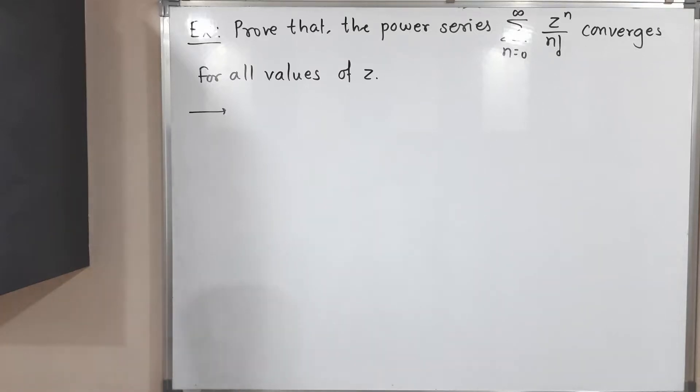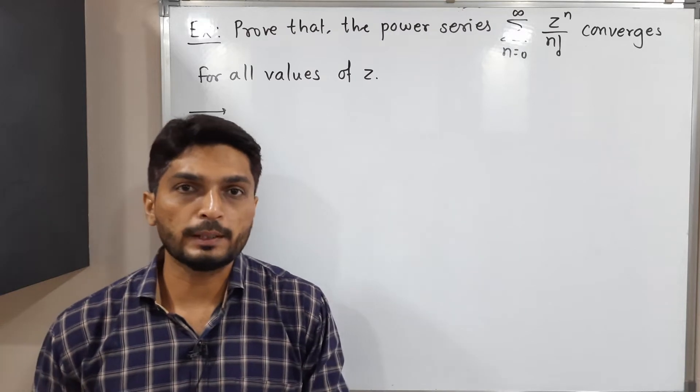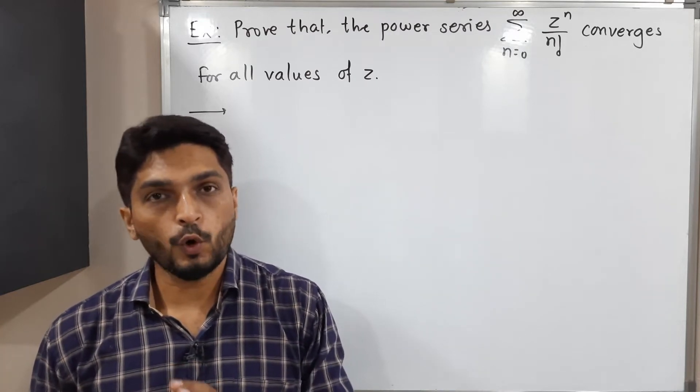Hi everyone, let us discuss this example. So in this example, we have this power series summation z raised to n upon n factorial. We have to prove that it converges for all values of z.